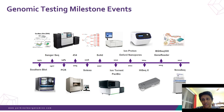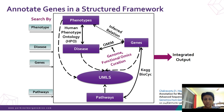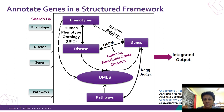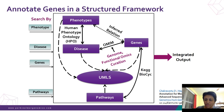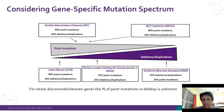Moving on to the gene level, looking at a gene in a structured framework: on the left you have phenotype, disease genes, and pathways, which come together under human phenotype ontology, or HPO terminology. This leads to an integrated clinical report. The key point is that understanding the variant spectrum of a gene and the pathogenic spectrum of the gene is critical in genetic testing.